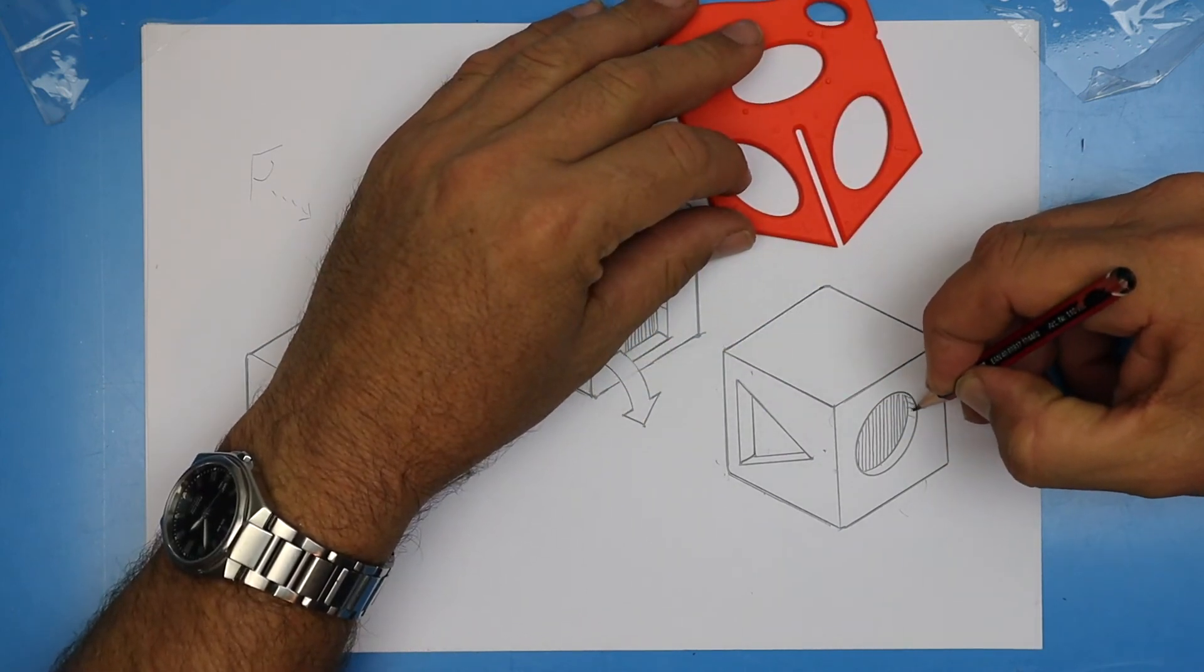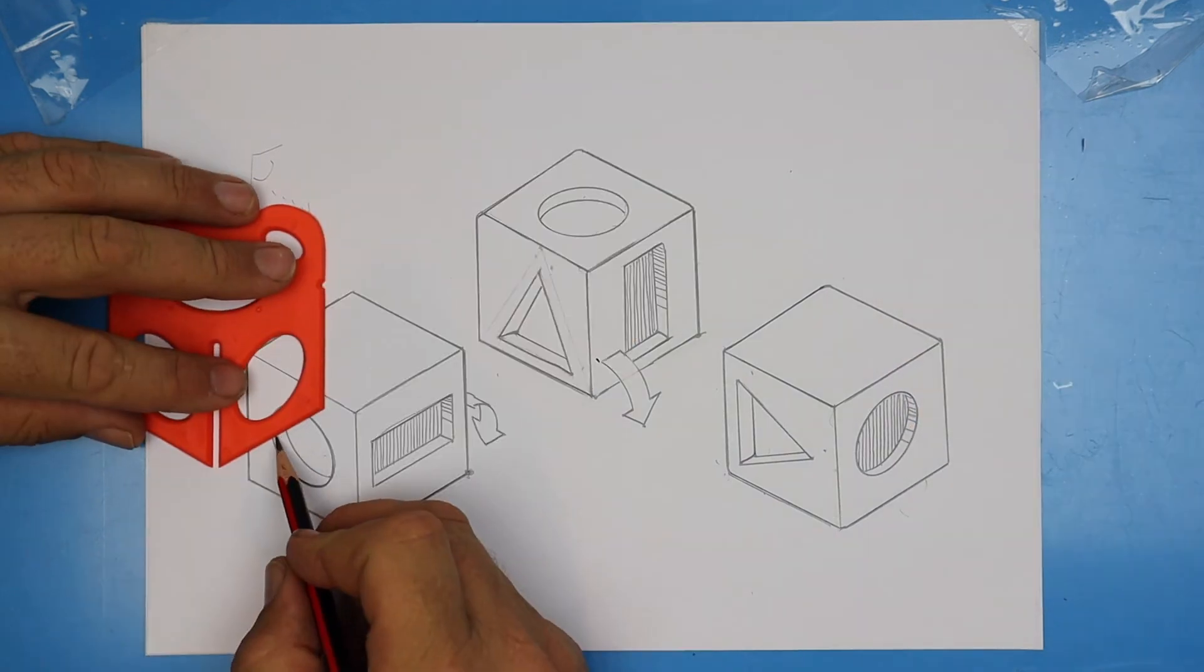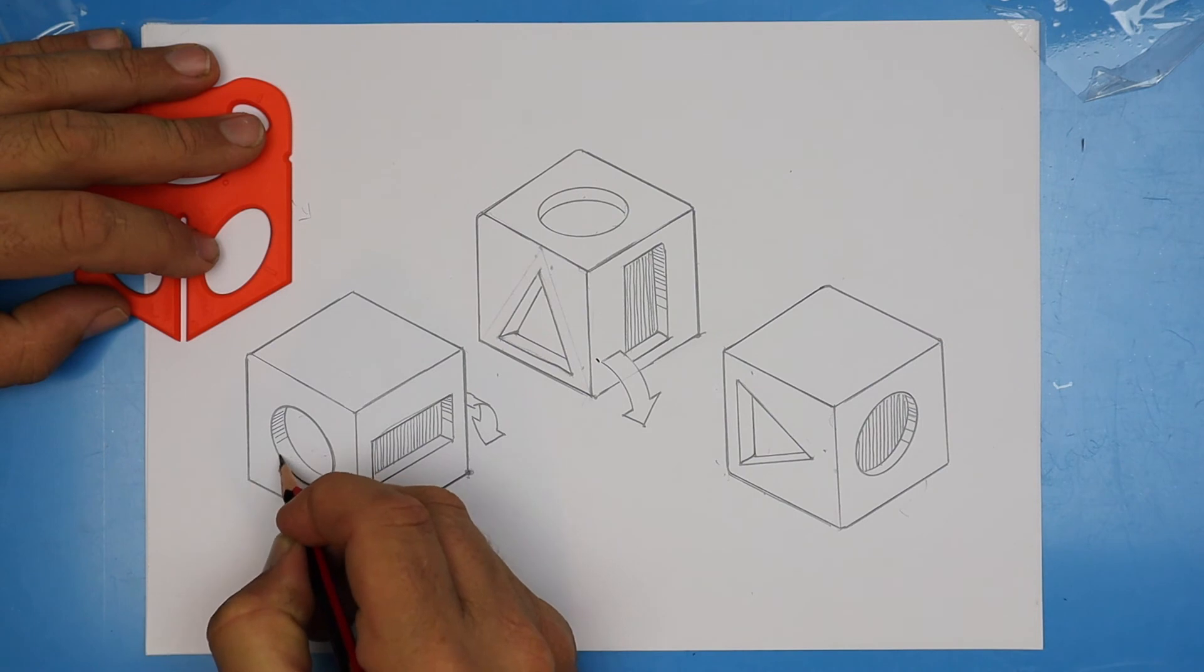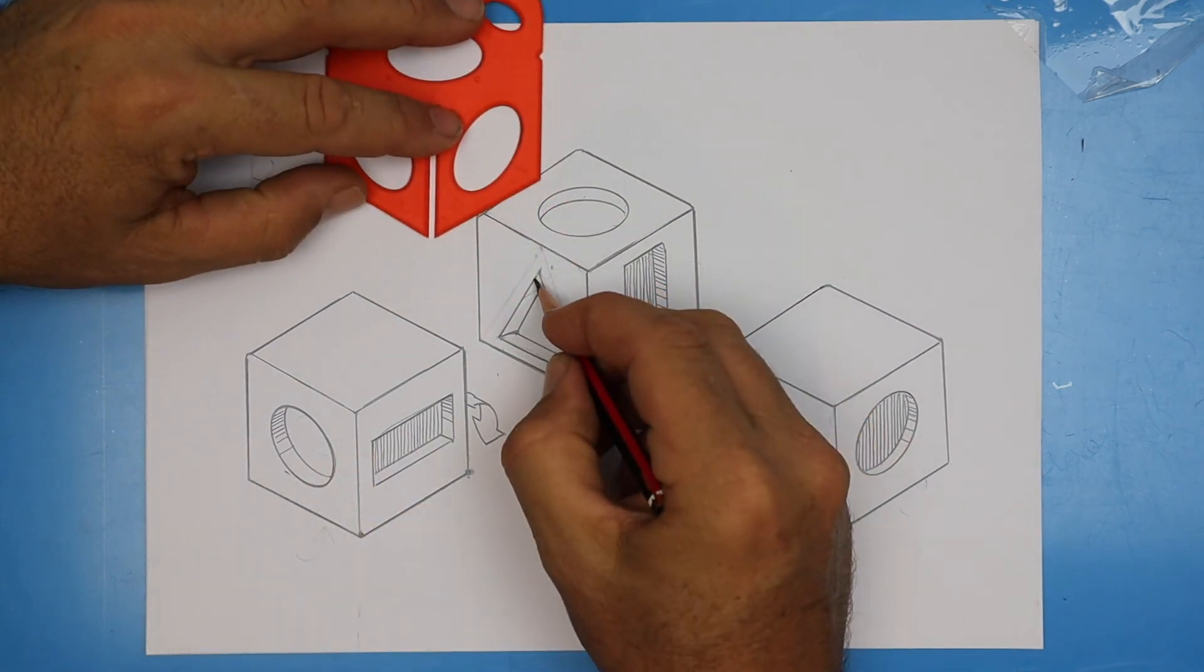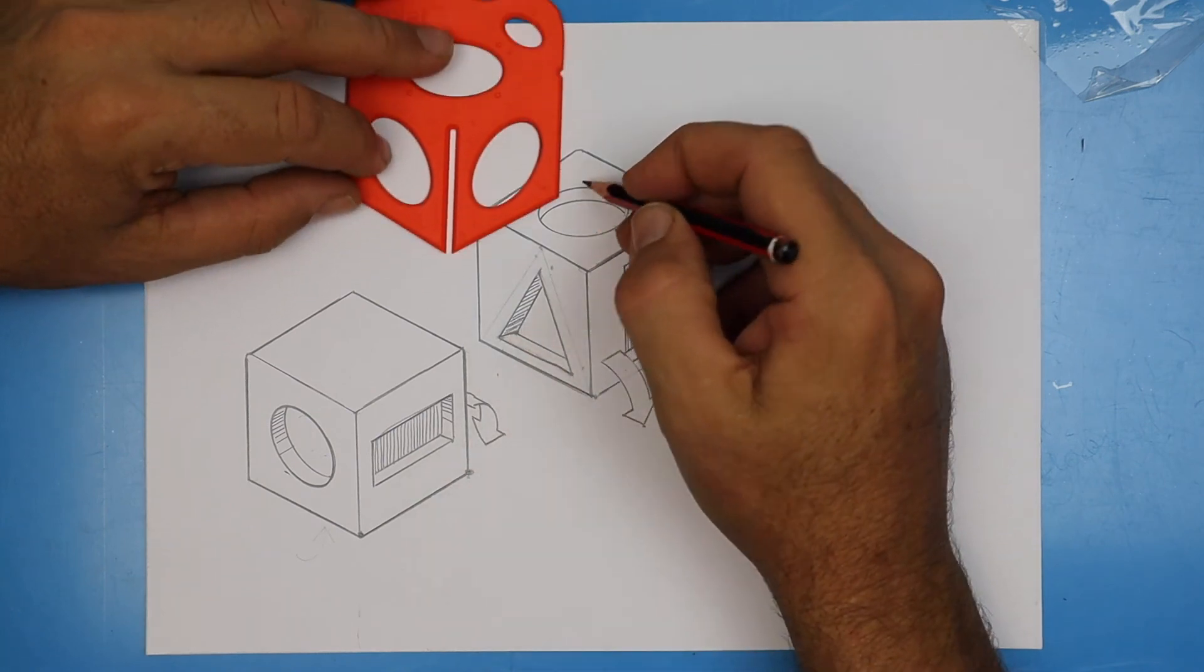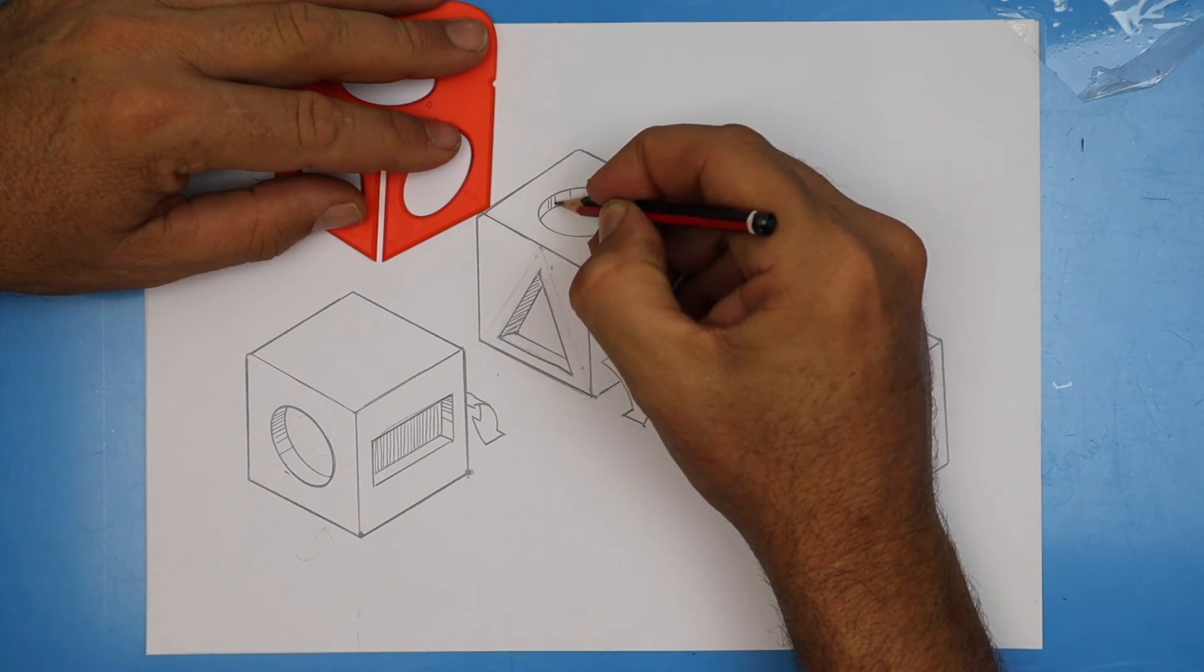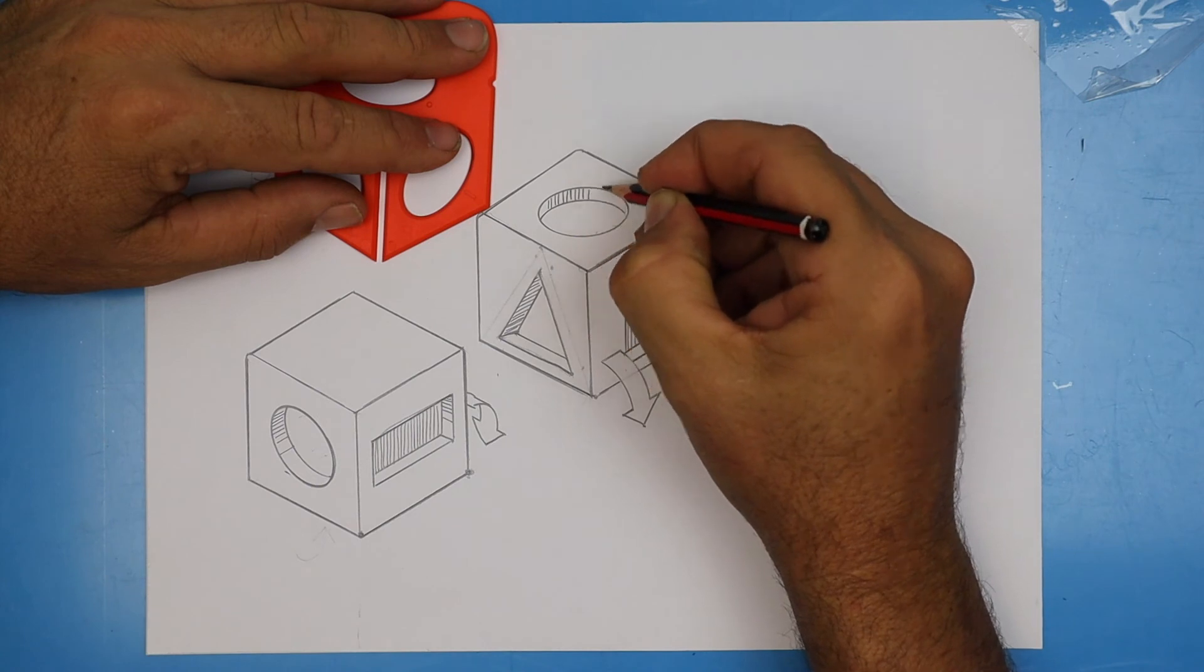For a little bit of shadow in this top corner, start with your lines close together and then space them out. This edge is a little bit longer, so I'm going to keep my lines close together a little further down and then start spacing them out. That's called a gradation. I'm giving myself a splat angle guideline and I'm trying to keep all my lines parallel.